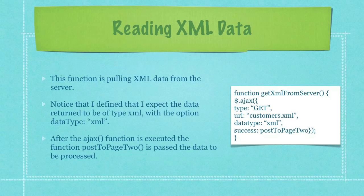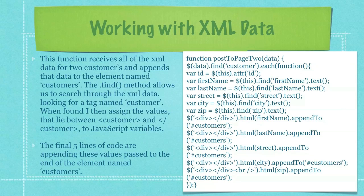This function is pulling the XML data from the server. Notice that I defined that I expect the data returned to be of type XML with the option 'dataType: xml'. After the Ajax function is executed, the function postToPage2 is passed the data to be processed. This function receives all of the XML data for two customers and appends that data to the element named 'customers'. The find method allows us to search through the XML data looking for a tag named 'customer'. When found, I assign the values between the opening and closing customer tags to JavaScript variables. The final five lines of code append these values to the end of the element named 'customers'.